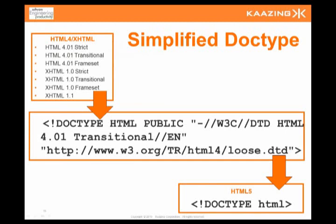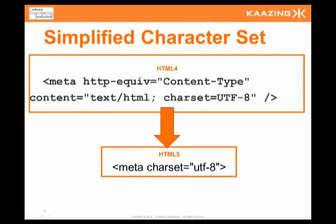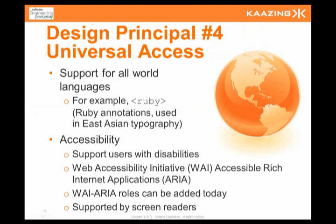A good example of simplification is the doctype element — something most people are familiar with but are often puzzled by. HTML5 got rid of all that complexity. Now there's just a single doctype: doctype HTML, and it works in all cases just to specify this is an HTML document. Similarly, with character sets there was a complicated mechanism to describe what character set was being used on a page. Now it's simply charset UTF-8, and you're done.